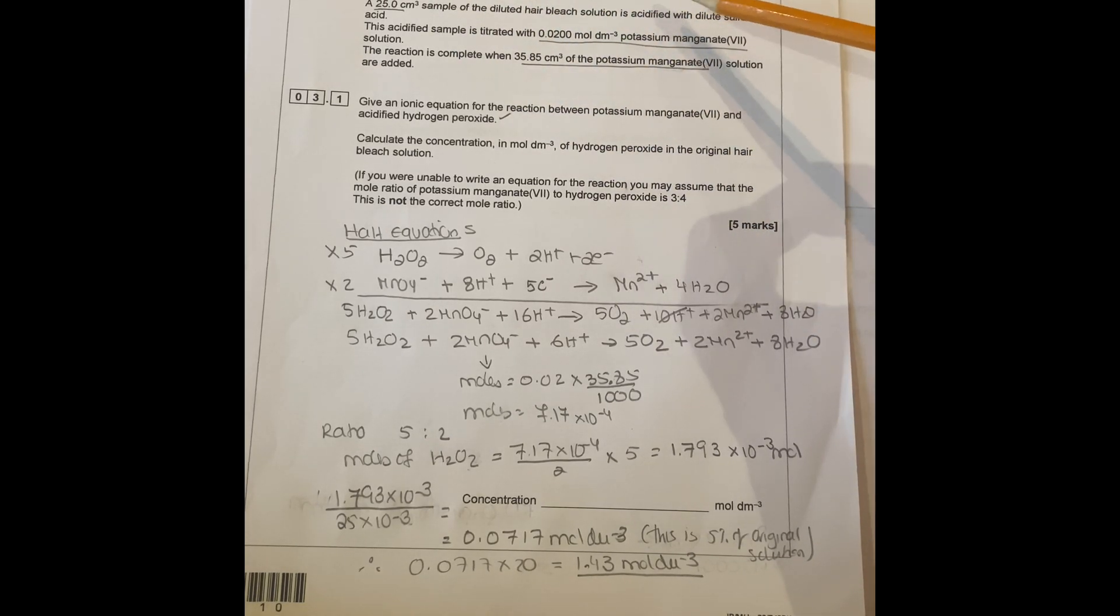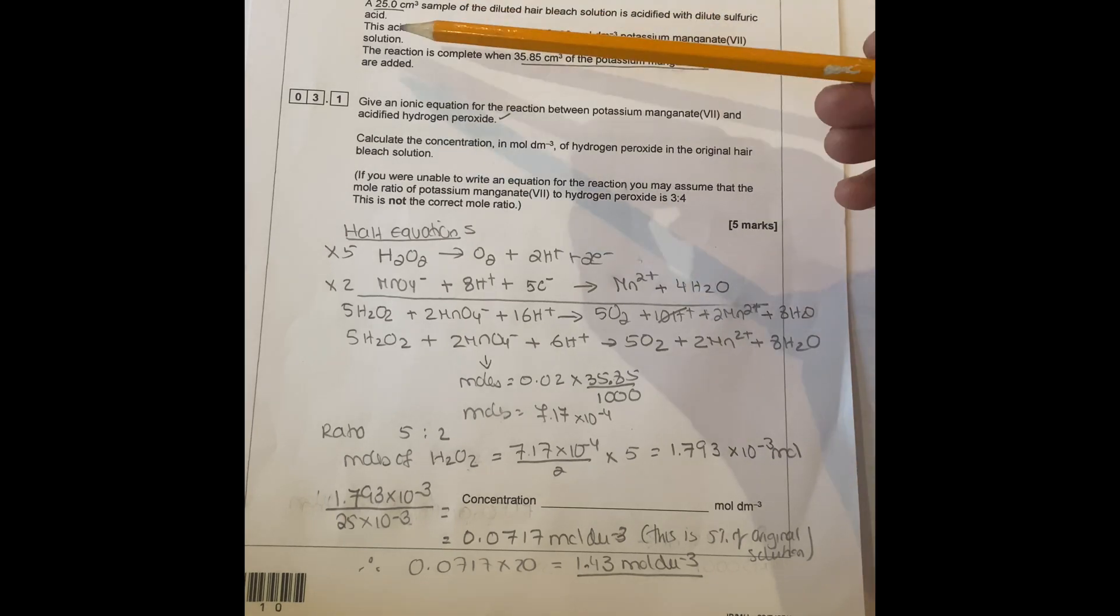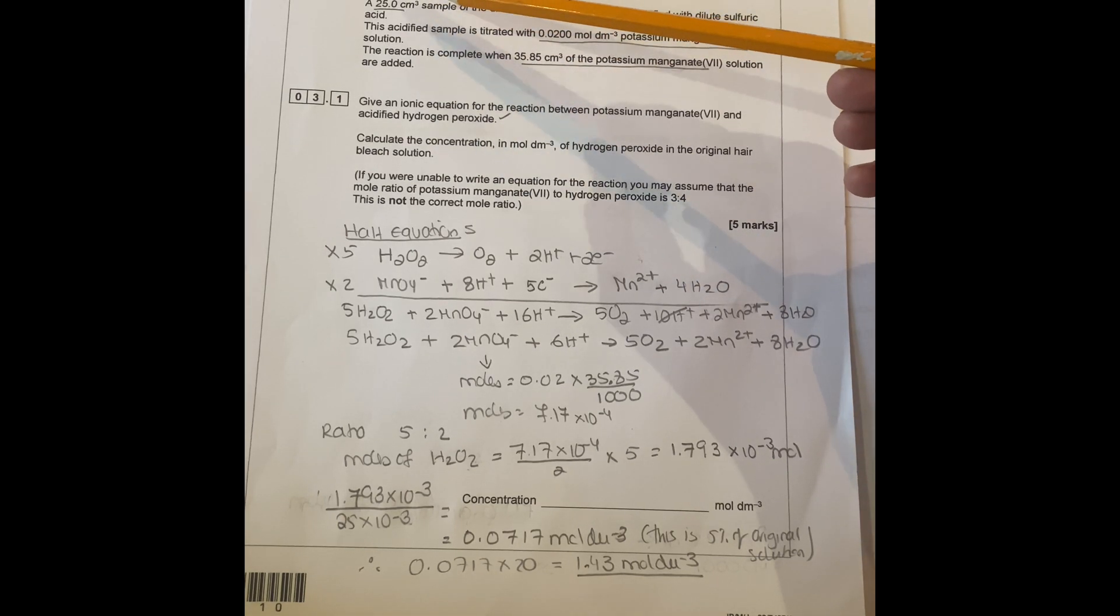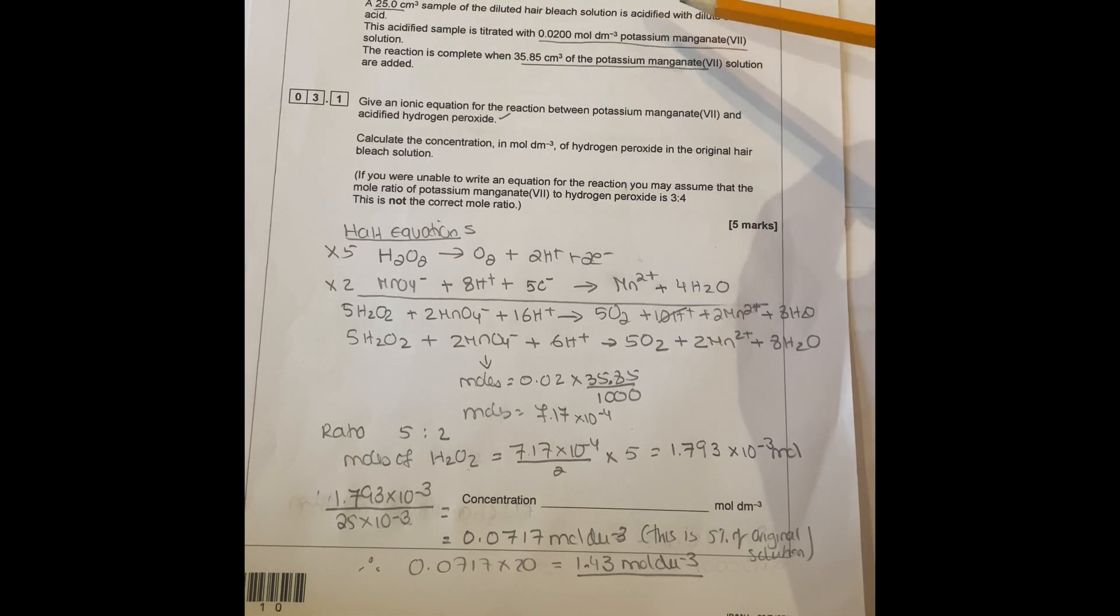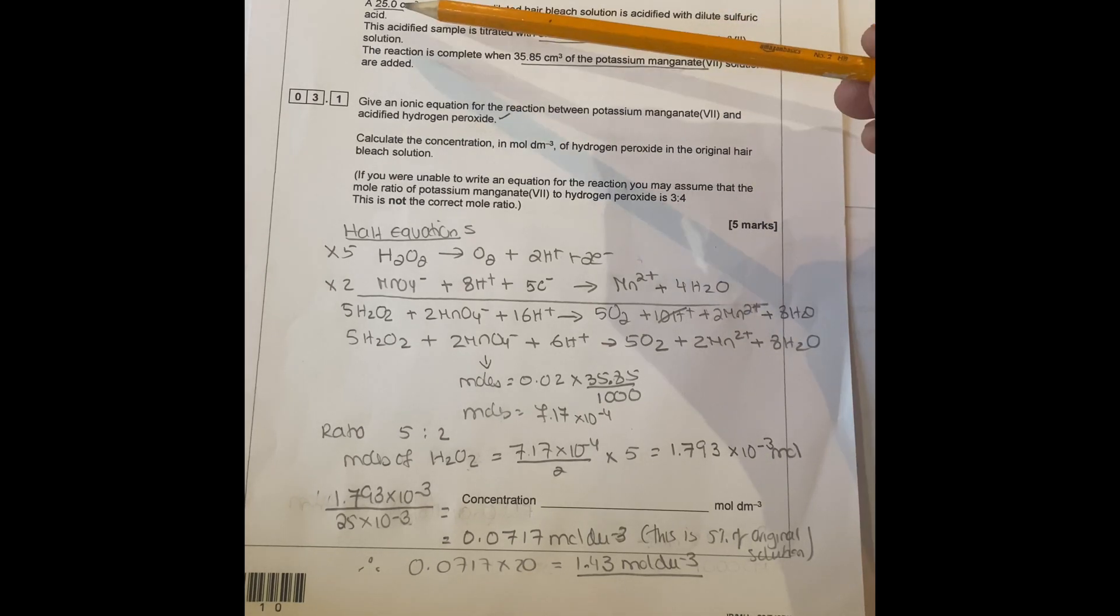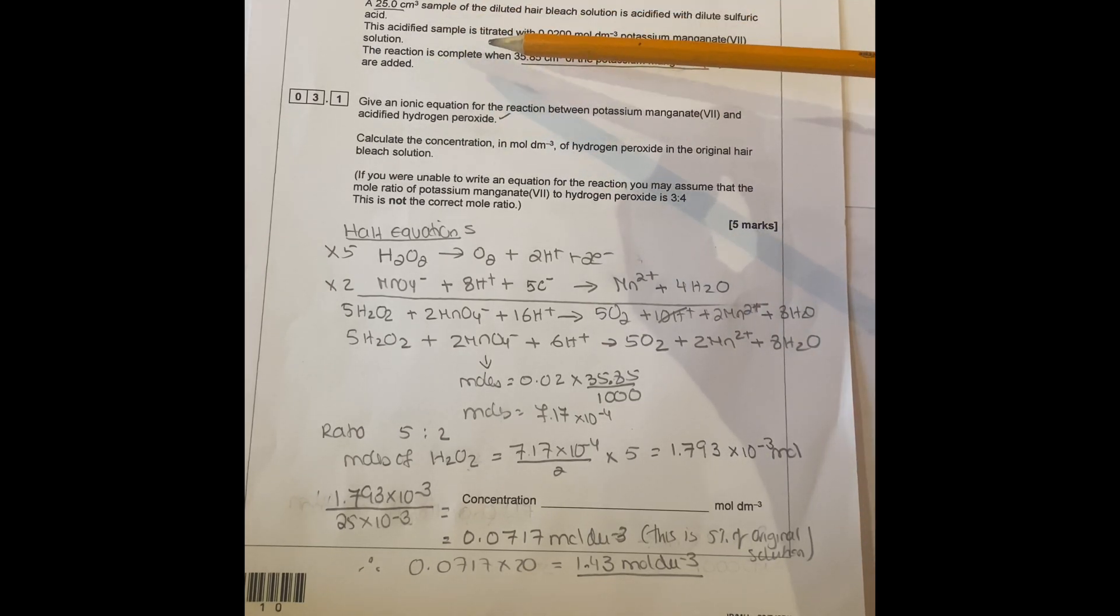A sample hair bleach solution is diluted with water. The concentrated hydrogen peroxide diluted solution is five percent. A 25 centimeter sample of the dilute hair bleach solution is acidified with dilute sulfuric acid. The acidified sample is titrated with 0.02 molar potassium manganate solution.